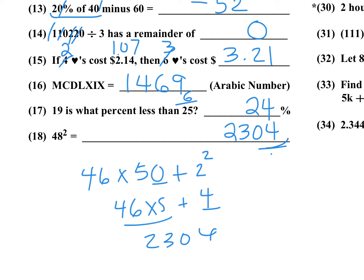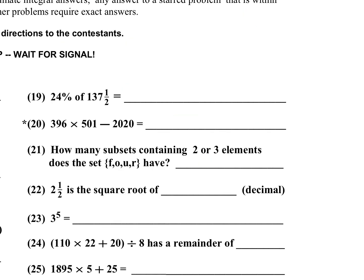In the second column, number 19: 24% of 137 and a half. That looks like a tough problem, but you can move the percent around. That's the same thing as 137 and a half percent times 24, and that 37 and a half percent you recognize that as three eighths. So this is 1 and 3 eighths, so that'd be 11 eighths times 24. 8 and 24 is 3, and 3 times 11 is 33. So for number 19, the answer was 33.